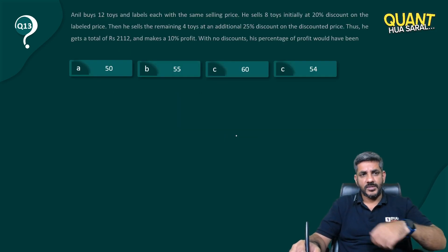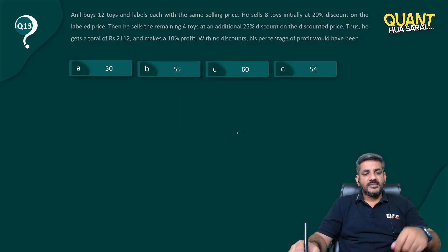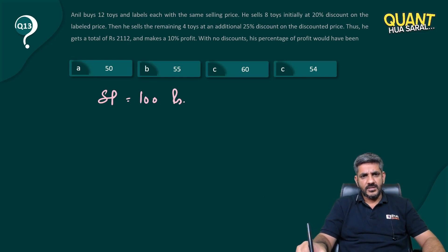Let's start discussing this question. Anil buys 12 toys and labels each with the same selling price. Let's say the selling price of each toy is Rs. 100. There are 12 toys and each one is labeled Rs. 100. He sells eight toys initially at 20% discount, so eight of them are